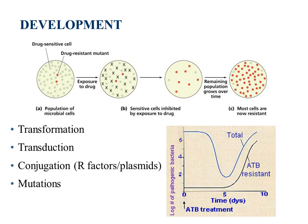Here is how resistance occurs — these are things from the genetics chapter. Transformation: free DNA is passed from the environment to a cell. It could be a dead cell lying on the ground with free DNA sitting there, and another cell comes in contact with that DNA. The DNA is taken up into the new cell, and the new bacterial cell gains drug resistance genes via the plasmid or free DNA. That's transformation.